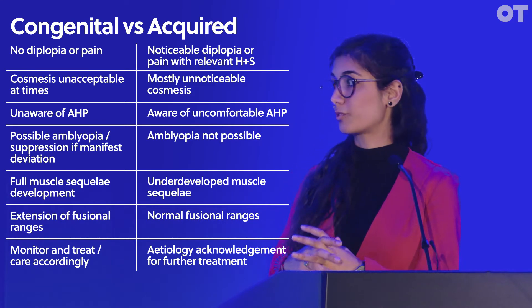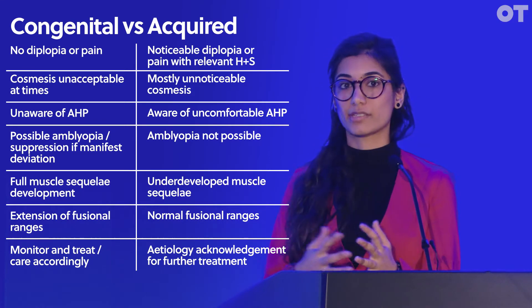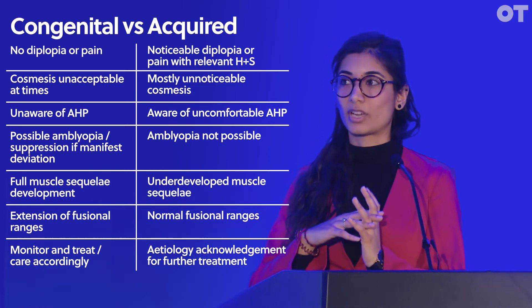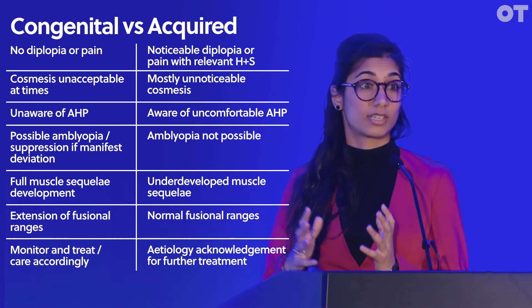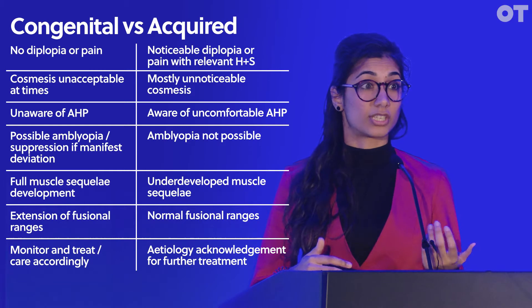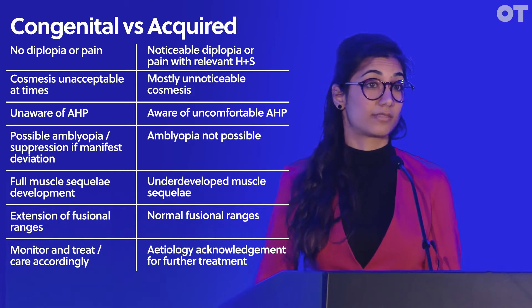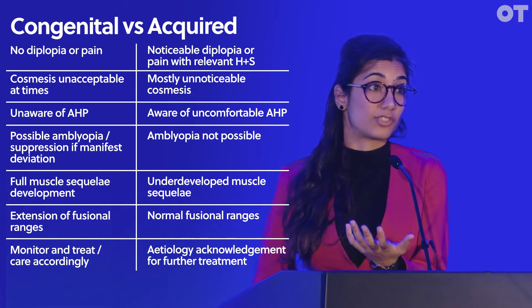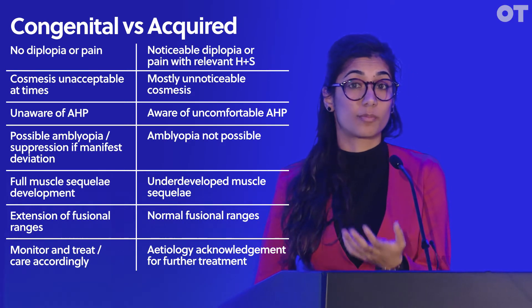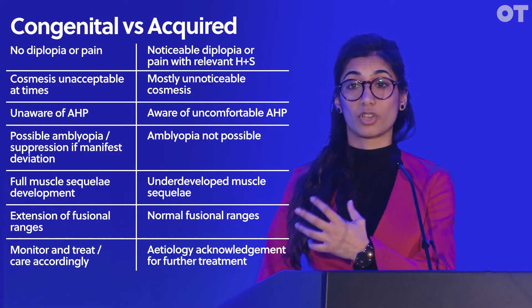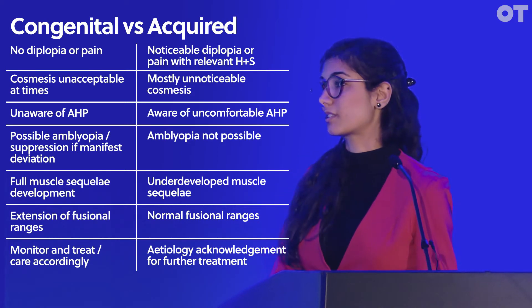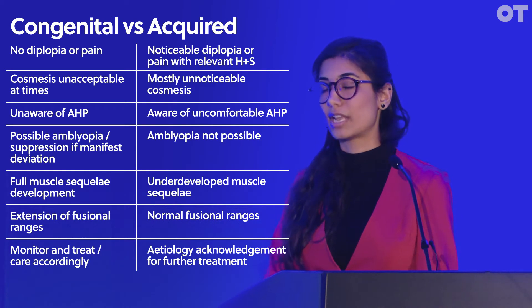With acquired deviations, that's a big problem — you need to know the etiology, what's causing these problems. They might need effective treatment straight away and be referred urgently, or just a routine general health workup. With congenital deviations, it's less critical to find a cause; you're generally going to manage and monitor them.